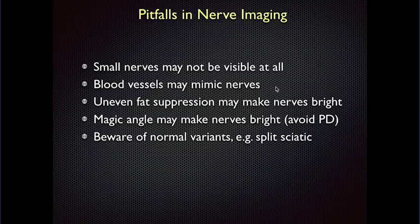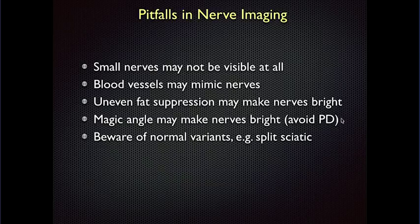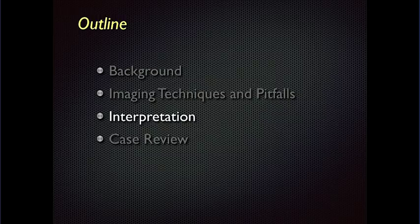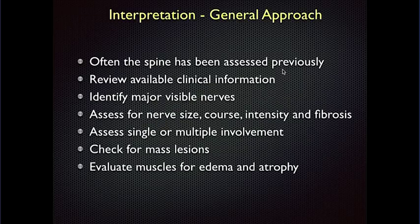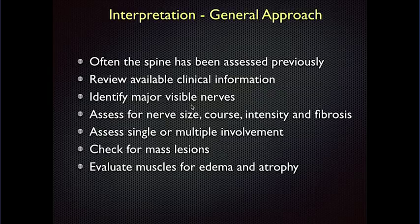Small nerves may not even be seen on imaging. Blood vessels — especially veins with bright signal from slow flow — can mimic nerves. Non-uniform fat suppression may make nerves look bright on one side or the other. Other nerves are susceptible to magic angle phenomenon, so you have to avoid a lot of proton density-weighted imaging. There are also some variants, like a split sciatic nerve. For interpretation, the spine should have been assessed previously, since disc and degenerative conditions explain a huge number of peripheral nerve problems.